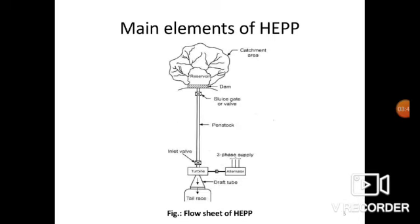Now, next is the main elements of hydroelectric power plant. The flow sheet of the hydroelectric power plant is shown here. This basic flow diagram contains the catchment area, reservoir, dam, sluice gate, penstock, inlet wall, turbine, generators, and draft tubes.